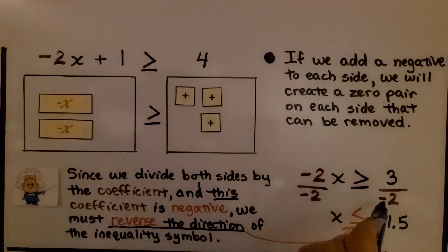And on this side, we have 3 divided by a negative 2. That's a positive and a negative, so our quotient's going to be a negative. And if we split 3 in half, we have 1 and a half, so it's a negative 1.5, 1 and 5 tenths. We had to reverse this symbol because we were dividing each side by a negative.